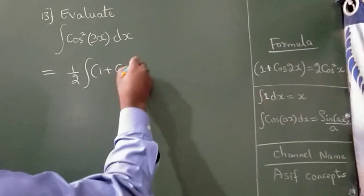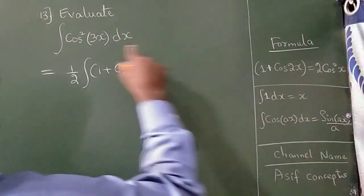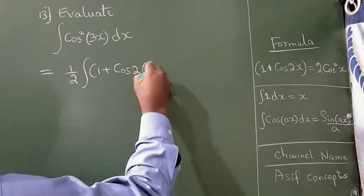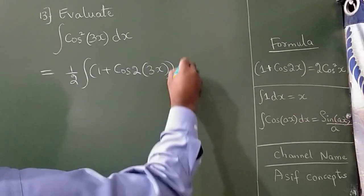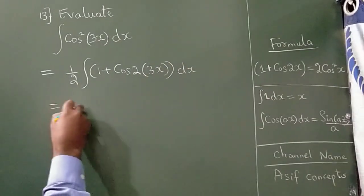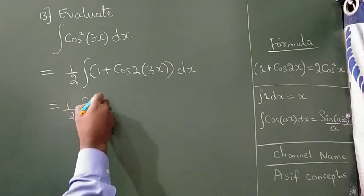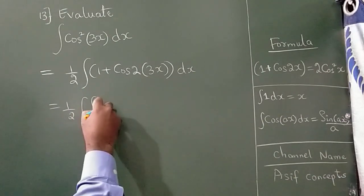integral of 1 plus cos 2x. Here the x value is 3x, so it becomes one-half integral of 1 plus